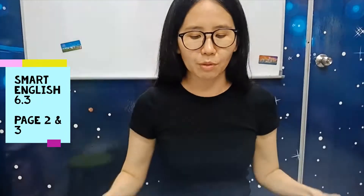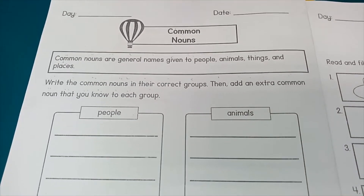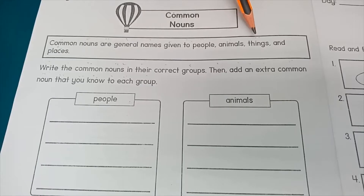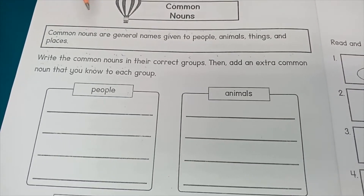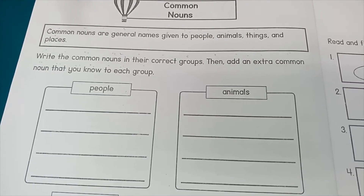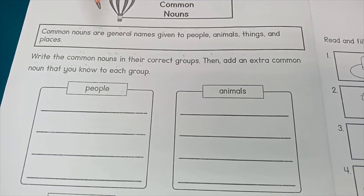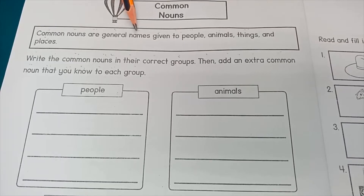Now we open to page number 2. So, common nouns. Common nouns are general names given to people, animals, things and places. So, remember what Ms. Howe said? They are general names, not the special names. Special names like Leia, Mimi, KLCC — all those are special names. General names are common nouns.